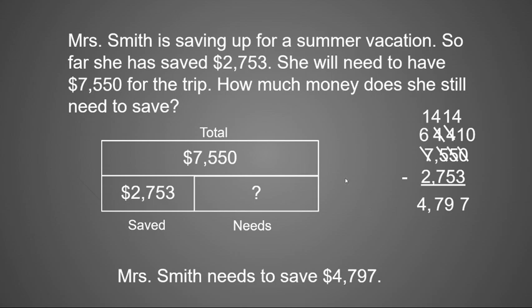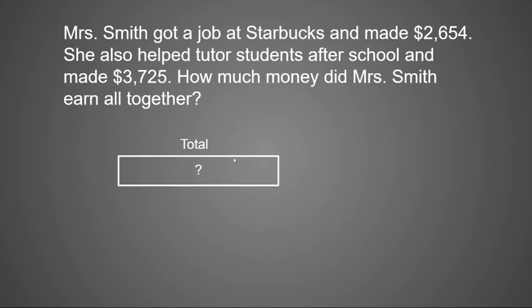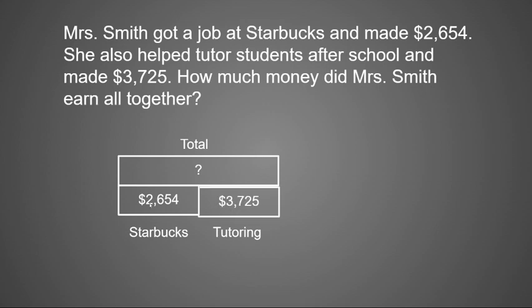Let's look at an additional example. Mrs. Smith got a job at Starbucks and made $2,654. She also helped tutor students after school and made $3,725. How much money did Mrs. Smith earn altogether? Remember, she's trying to go on that trip. This time the problem doesn't tell us a total — we need to find what her total is. So we're still going to start with our total up top, but instead of a number, that's going to be our question mark. We know she earned $2,654 at Starbucks and $3,725 from tutoring — those are our two parts.